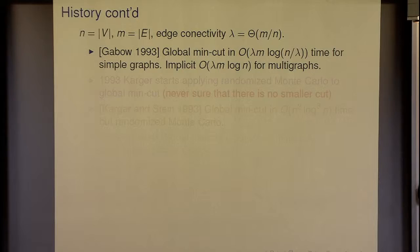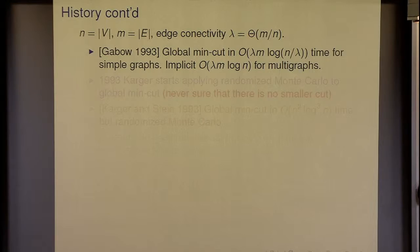Garbo showed you can find the global min-cut in lambda·m time. The edge connectivity lambda could be as large as n, and we can find the min-cut in lambda times m. This was for simple graphs, and it only gets slightly worse for multigraphs. Whenever we talk about lambda, we're talking about unweighted graphs, since edge connectivity is only defined for unweighted graphs.